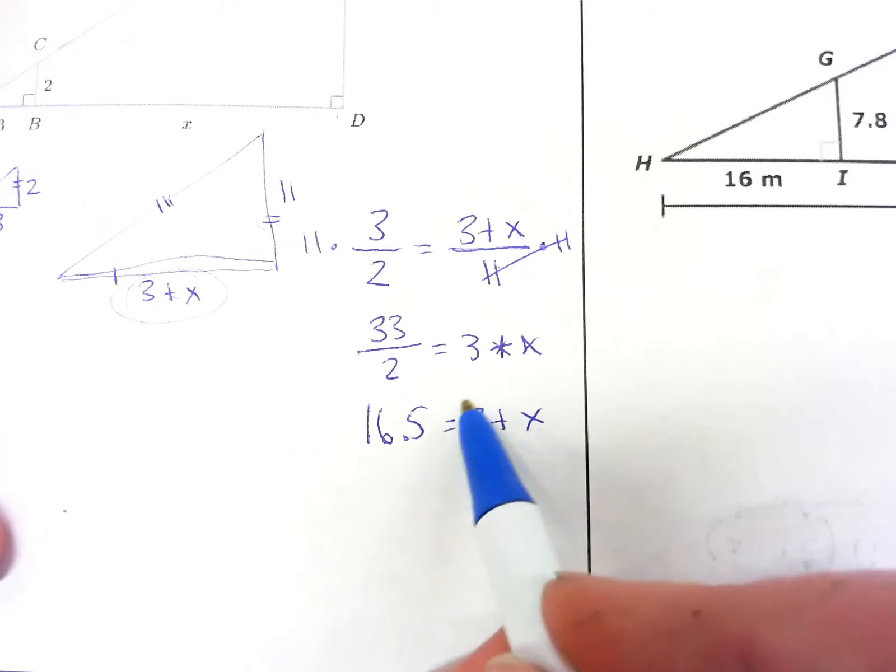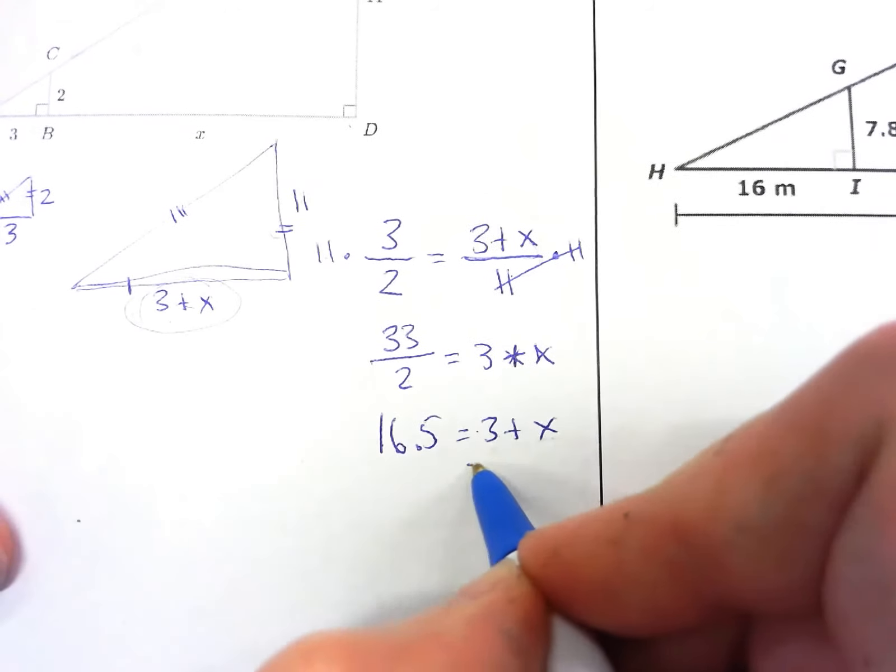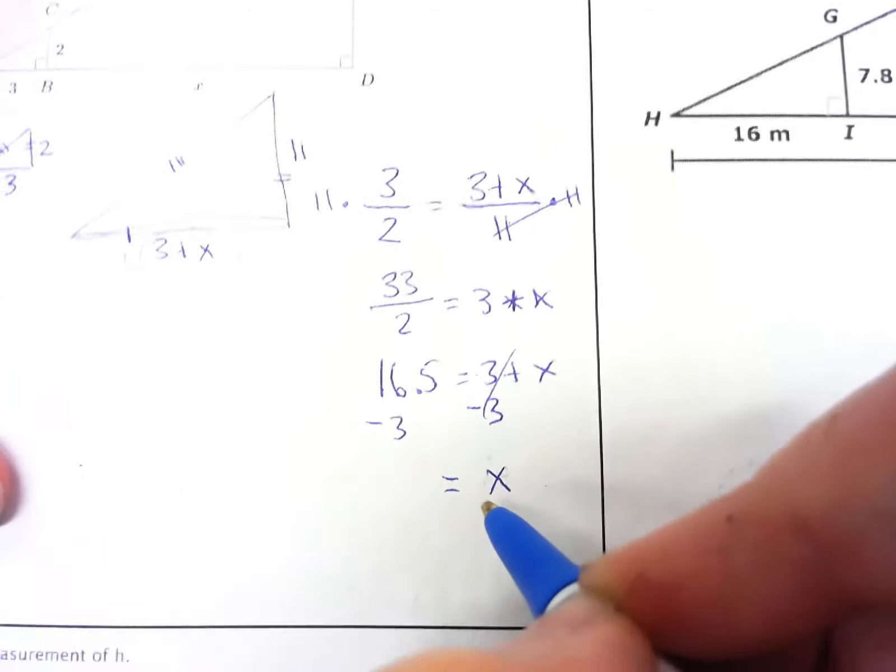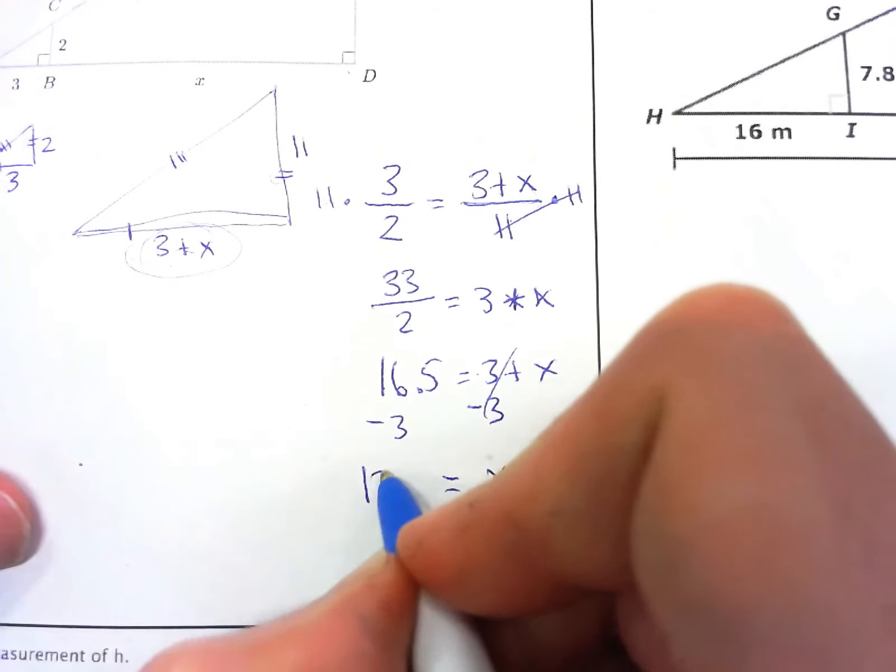And then I need to get x by itself, so I need to undo this. So it's a positive 3, I need to subtract 3, subtract 3. And we have x is 16.5 minus 3 would be 13.5. So let's see if that makes sense.